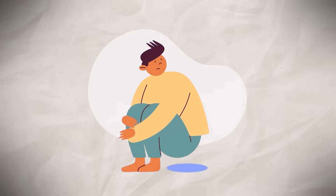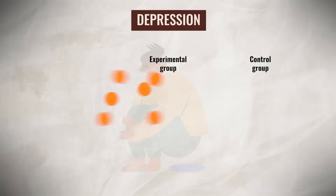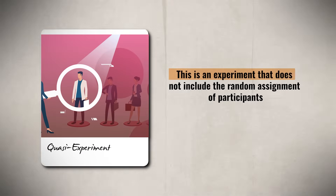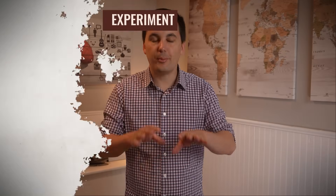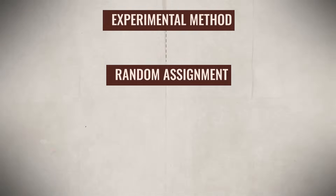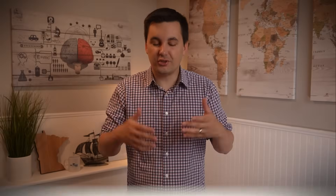There are times when it is not ethical or possible to randomly assign participants. For instance, in a study on depression, you cannot randomly assign participants to become depressed or not. In these cases, researchers run a quasi-experiment, which does not include random assignment. This type of experiment cannot determine cause and effect because differences between groups are not controlled by random assignment. The experimental method must use random assignment and always involves independent and dependent variables, while non-experimental methods will not always use random assignment.